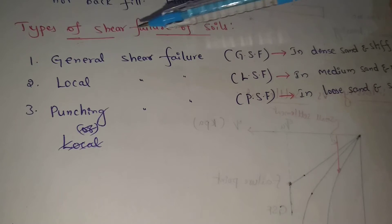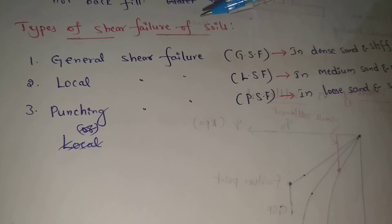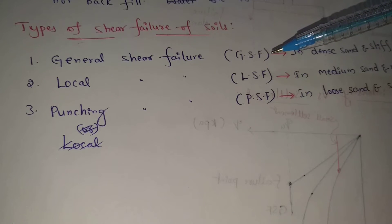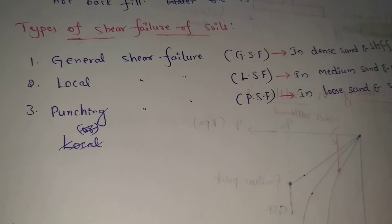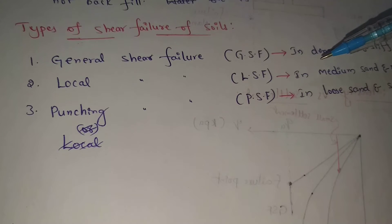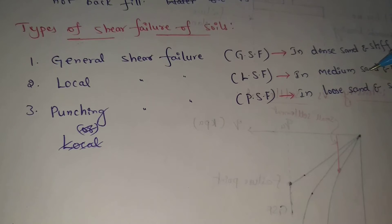Next topic: Types of Shear Failures of Soils. There are three types of shear failures. First, General Shear Failure, indicated as GSF. This occurs in dense sand and stiff clays. Second, Local Shear Failure, indicated as LSF. This occurs in medium sand and medium clays.